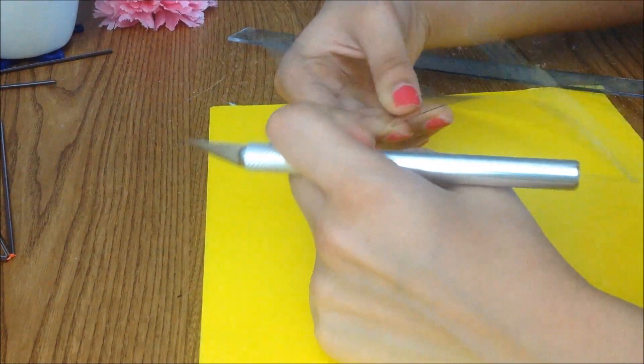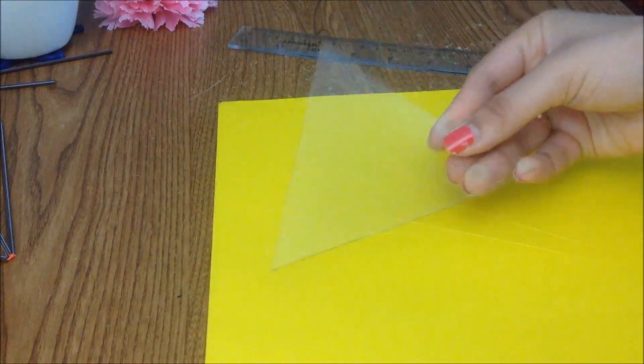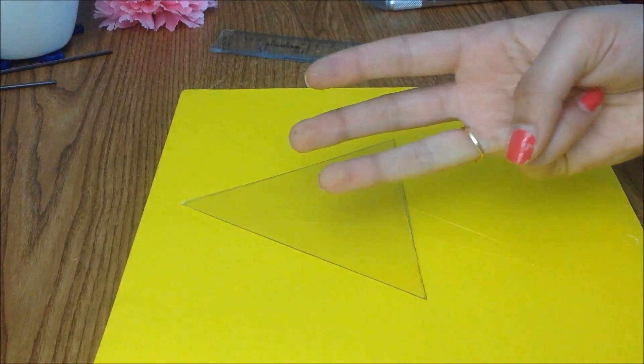After you've cut all sides, carefully pop out your triangle. Now you want to create two more five inches equilateral triangles.